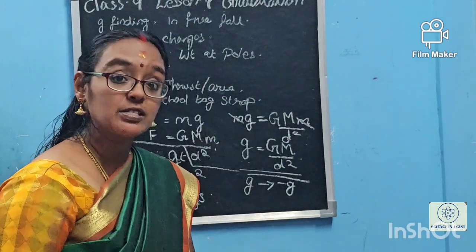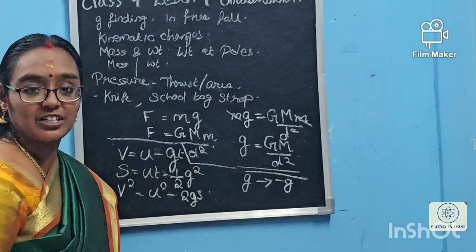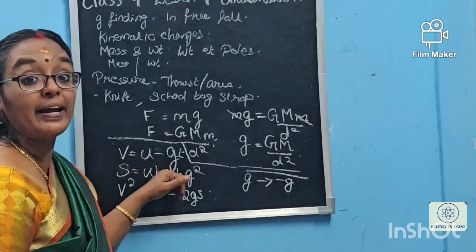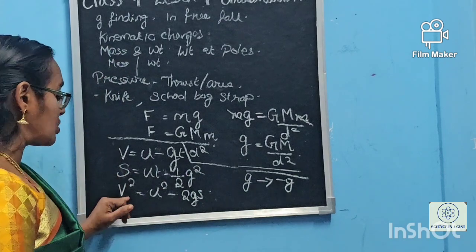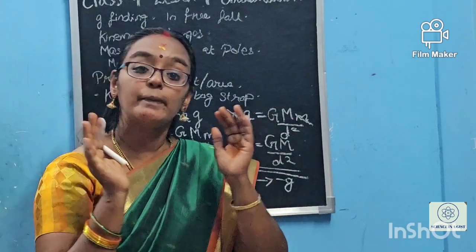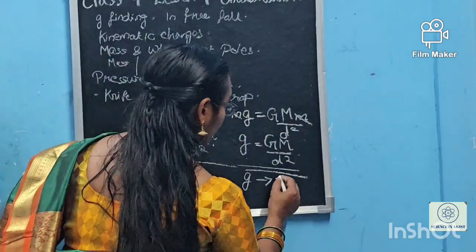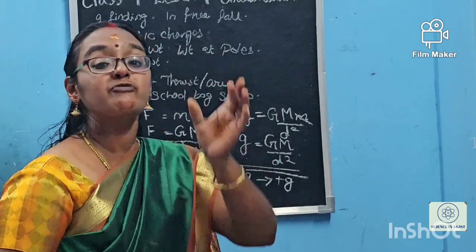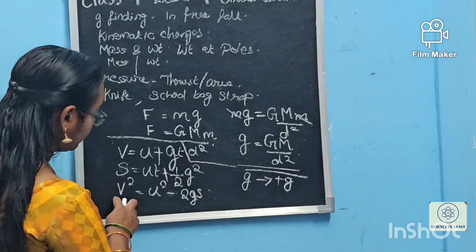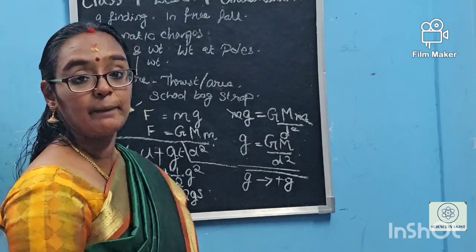This is the most difficult part when facing a physics problem — you must know whether the object is moving up or down to correctly apply the sign of g. If the object is moving up, G is −g; if falling down, g is positive. Knowing this correctly means the problem section will not be a problem for you.